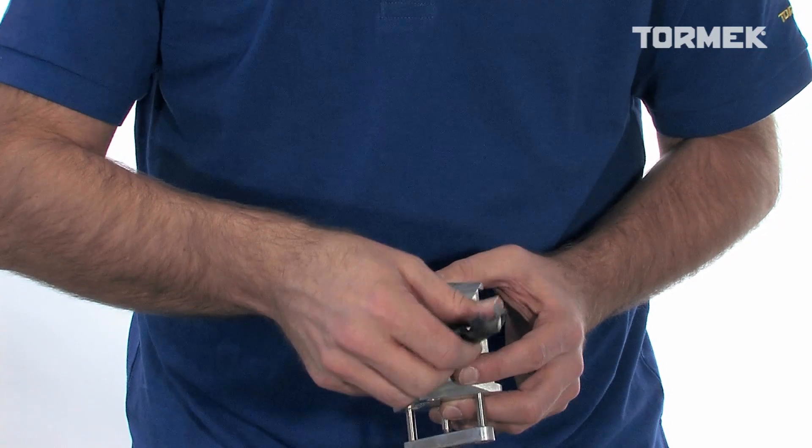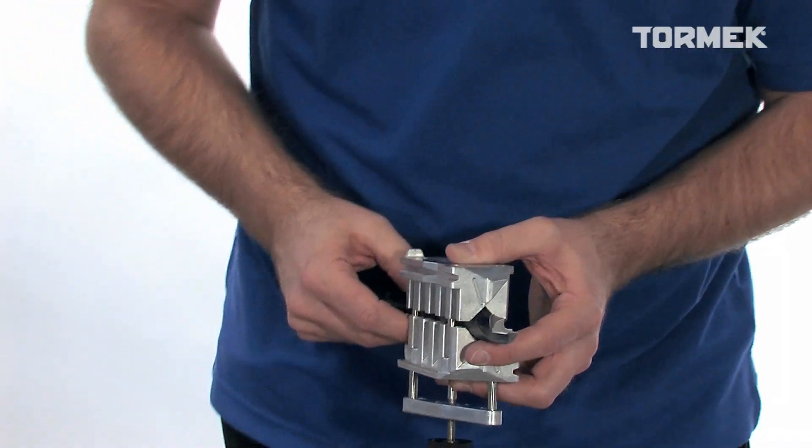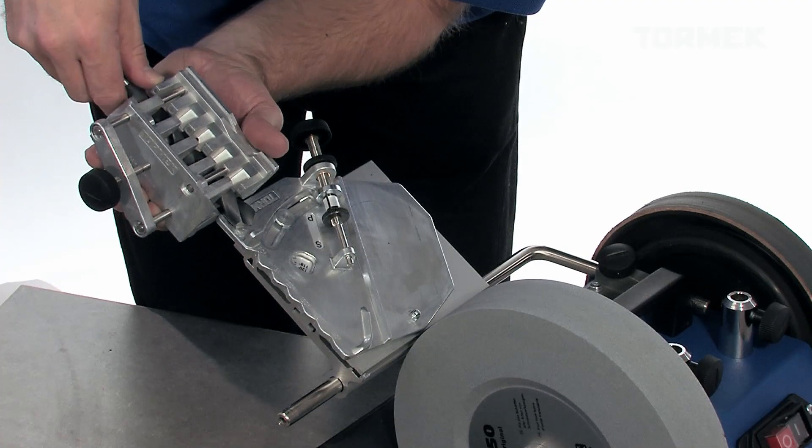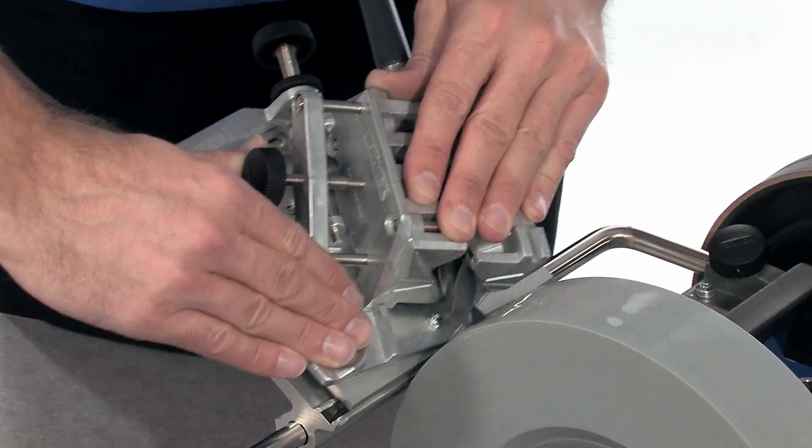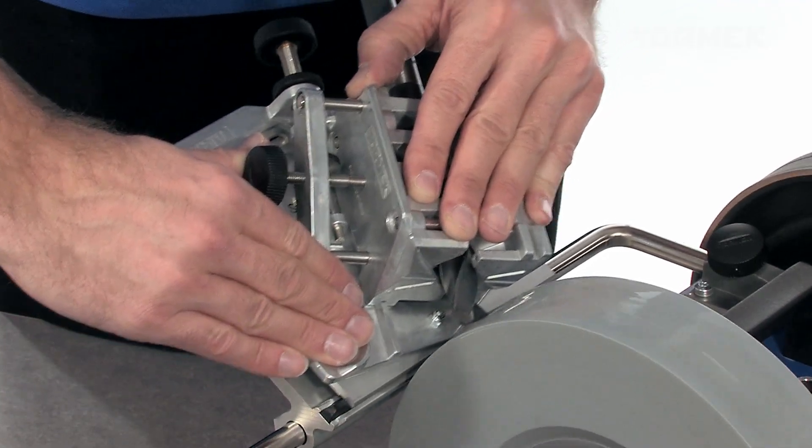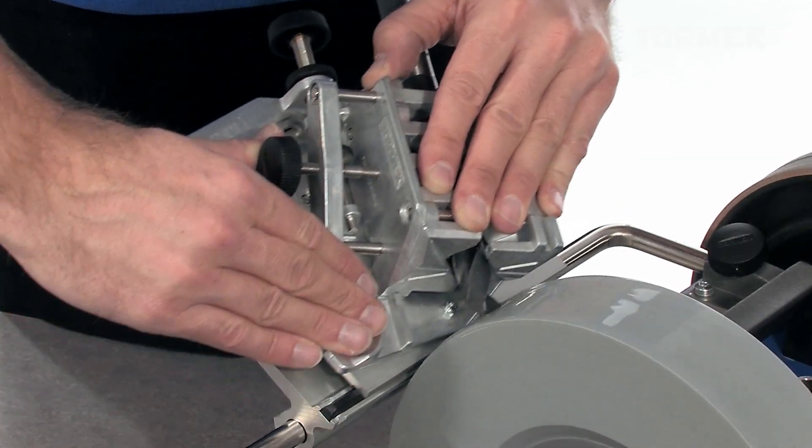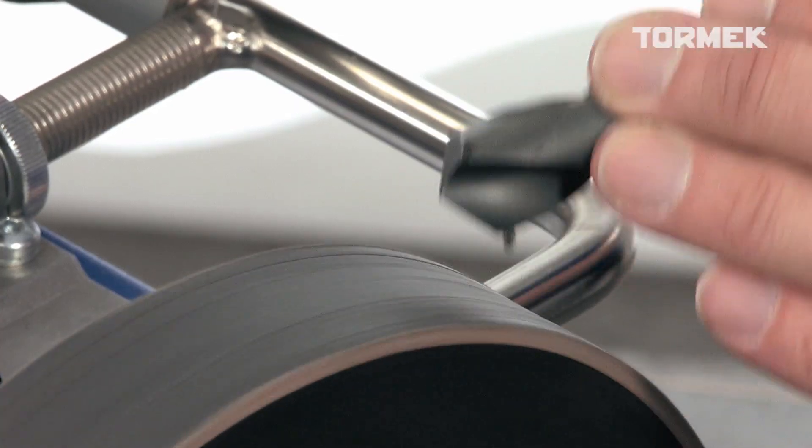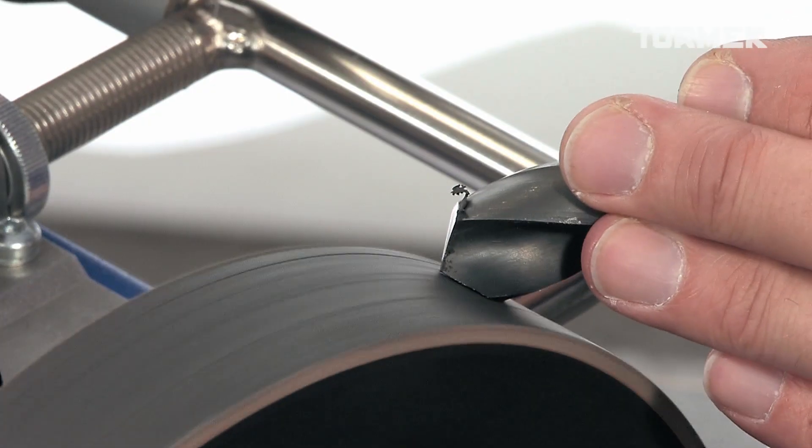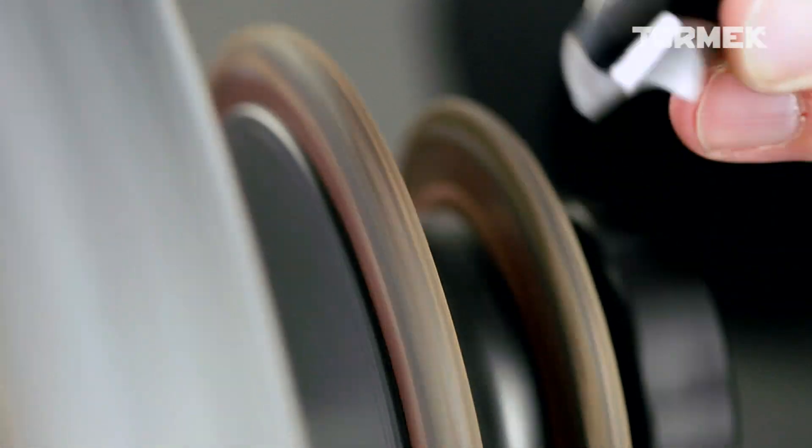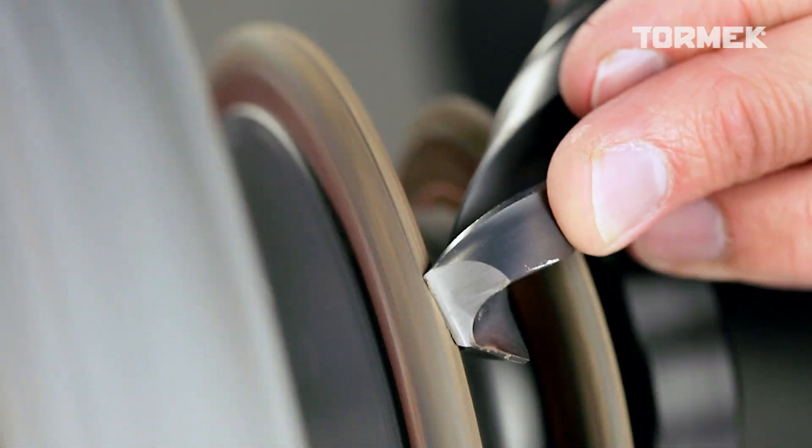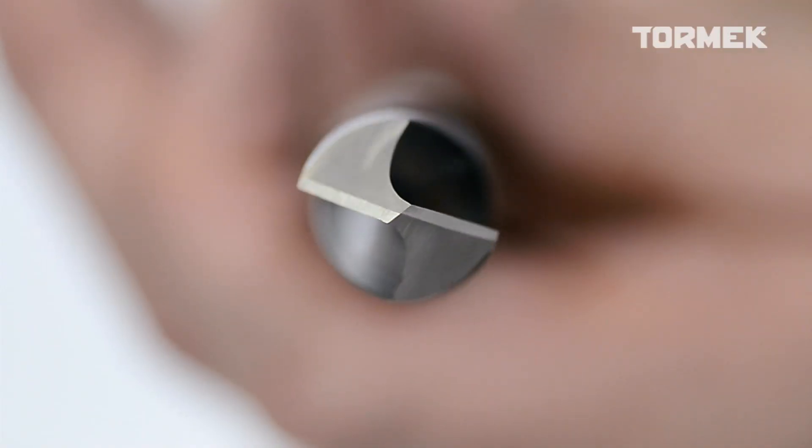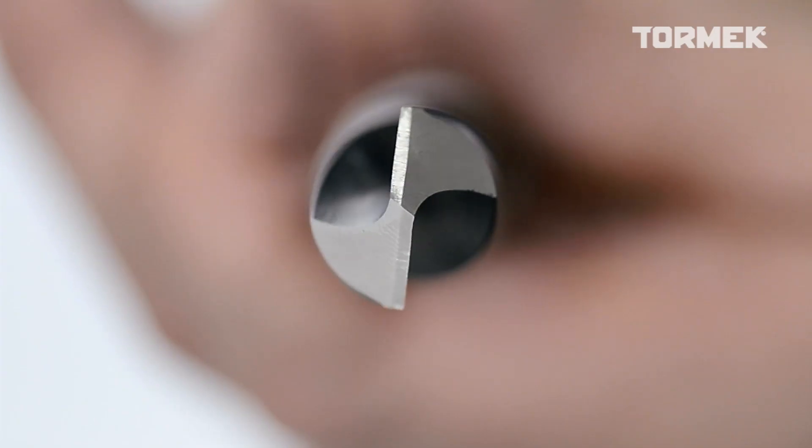You can sharpen drill bits up to 22 millimeters. You can proceed and hone away any burr on the profiled leather honing wheels. Now the drill bit has a perfectly formed and effective tip.